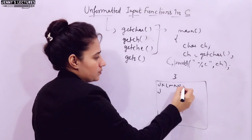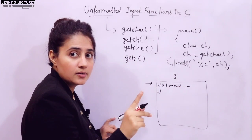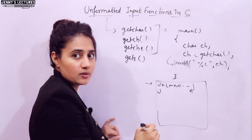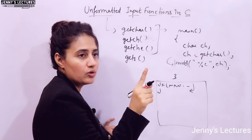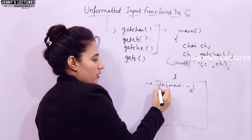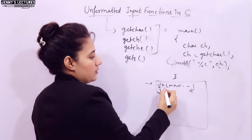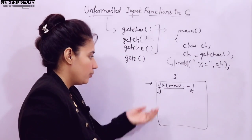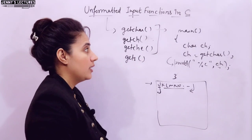Suppose I enter J, K, L, M, N, O — many characters. But getchar() will stop reading when you press enter. It will accept only one character: whenever you press enter, only J is stored in ch and only J is printed. The other characters are not stored. If you want to print the ASCII value, you can use %d to print the ASCII value of that character.